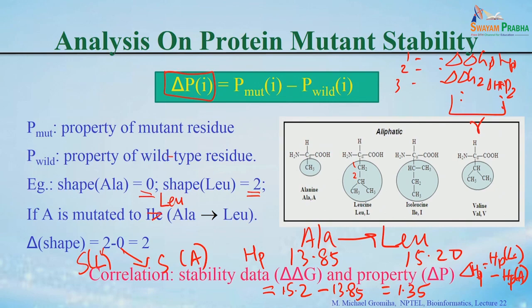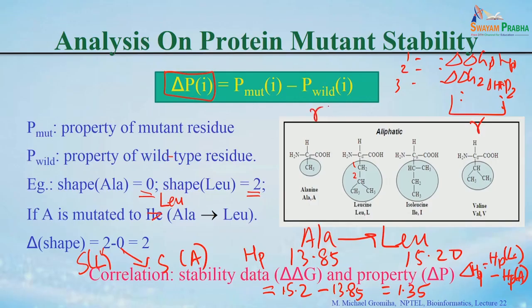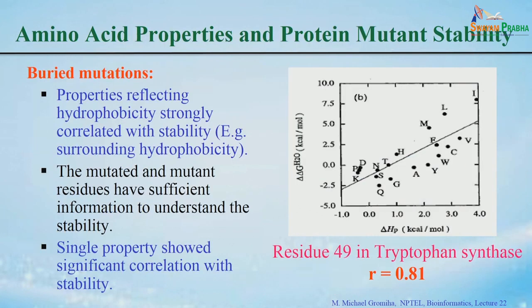The correlation ranges from minus 1 to plus 1. If it is plus 1, the property is directly correlated; minus 1 means inversely correlated; and if it is 0, there is no correlation. Based on this number we can tell how well a particular property is correlated with stability.